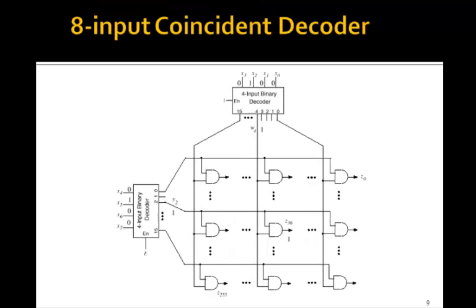This is what's called an 8 input coincidence decoder. There are two 4 to 16 decoders. This one provides all of the columns. This 4 to 16 decoder provides all of the rows. And at each intersection, there's an AND gate.